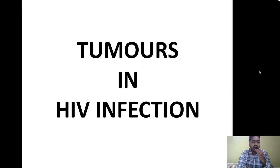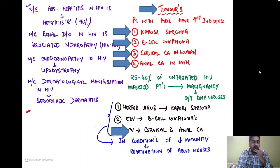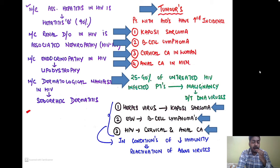Now let us discuss tumors in HIV infection. Patients with AIDS have an increased incidence of Kaposi sarcoma, B-cell lymphoma, cervical cancer in women, and anal carcinoma in men. Around 25 to 40 percent of untreated HIV-infected patients present with malignancy because of DNA viruses. Herpes virus causes Kaposi sarcoma, Epstein-Barr virus causes B-cell lymphomas, and human papillomavirus causes cervical and anal carcinoma. These carcinomas occur because in conditions of reduced immunity like AIDS there is reactivation of these DNA viruses.